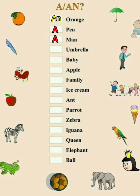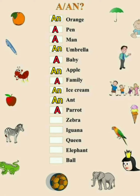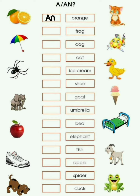A man, an umbrella, a baby, an apple, a family, an ice cream, an ant, a parrot, a zebra, an iguana, a queen, an elephant, a ball, an orange, a frog, a dog, a cat, an ice cream, a shoe.